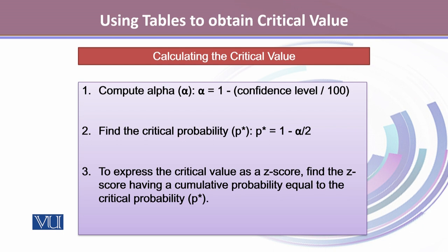The second is to find the critical probability that is P star, which is 1 minus alpha by 2.